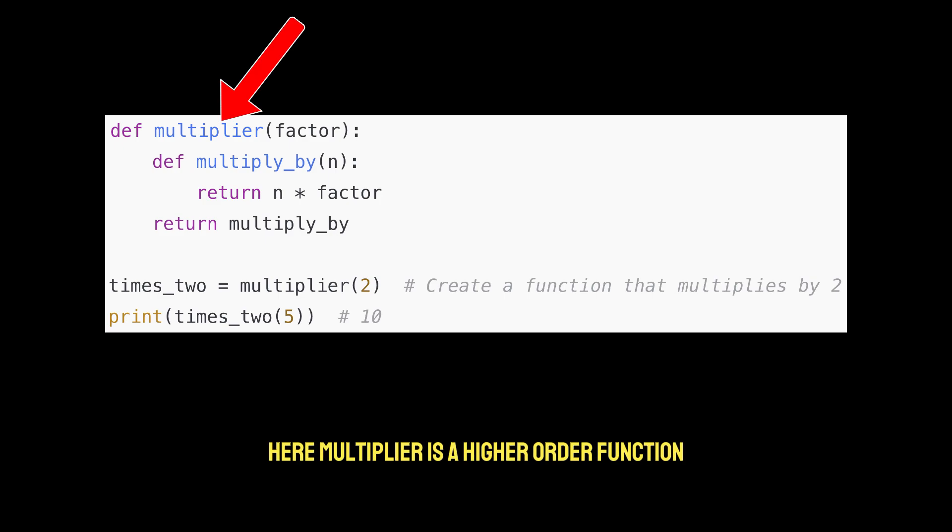Here, multiplier is a higher order function because it returns another function. The return function, called multiply_by, remembers the factor you provided.